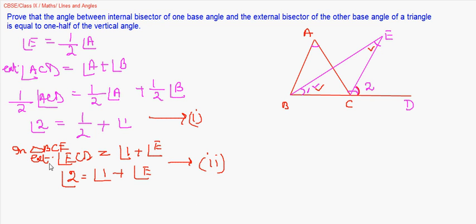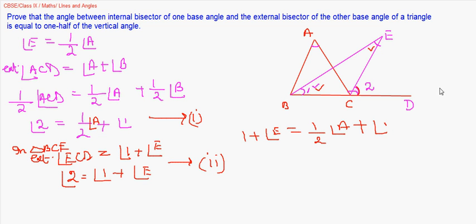Now I can equate these two equations since the left-hand sides are equal. So angle 1 plus angle E equals half of angle A plus angle 1. Angle 1 cancels from both sides, and we get angle E equals half of angle A. So we are done with it.